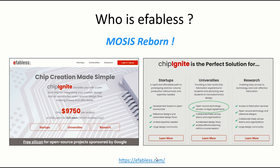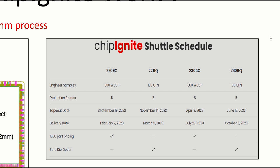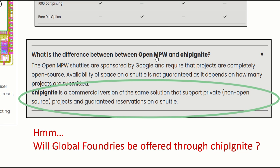You can read more about it on the eFabless site. What you can see there is about 10 square millimeter of space where you can do your own designs. They've already got a pad frame and even a microprocessor — so this seems like an Arduino-style environment, except it's for hardware. On the right is an example schedule for Chip Ignite runs. It looks like they run about every other quarter. Some of them you get the parts assembled and others you get bare die. They have open MPW runs or Chip Ignite runs.